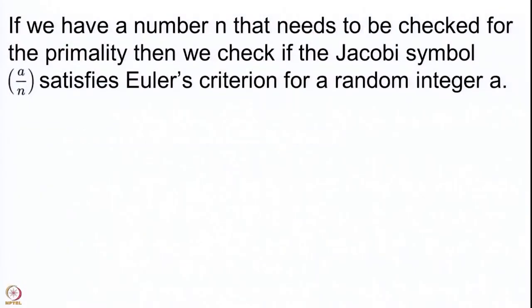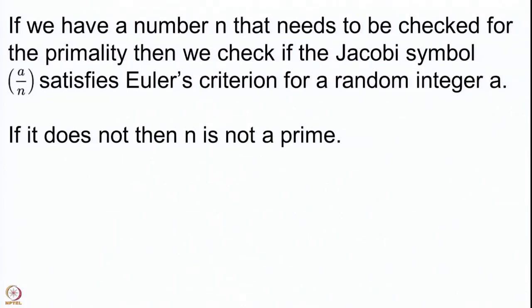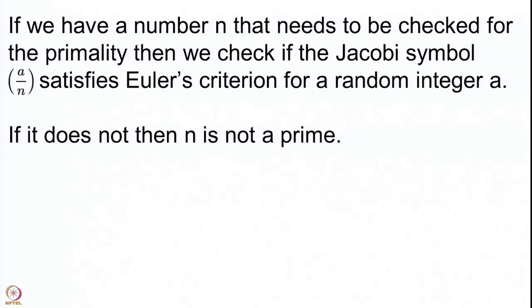We check whether the Jacobi symbol (a/n) satisfies Euler's criterion for the integer a. If it does not — that is, if (a/n) is not congruent to a^((n-1)/2) modulo n — then n is not a prime, because in the prime modulus case the Jacobi symbol becomes the Legendre symbol, which does satisfy Euler's criterion. So this gives a very nice primality test. However, you may happen to choose an a for which Euler's criterion does hold. Can we then say n is prime? No — but what we can say is that n is probably prime.